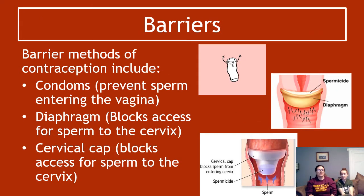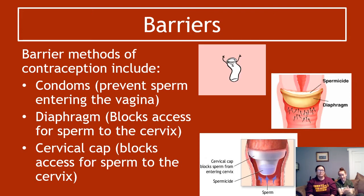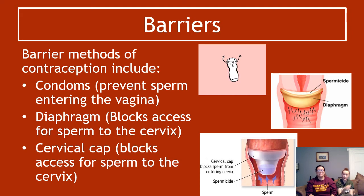In terms of barriers, the most common one is condoms, which physically prevent the sperm from being able to enter the vagina. If they're not in the vagina, they cannot swim up to the oviduct to meet an ova. A diaphragm blocks access to the cervix from the sperm. A cervical cap also blocks access from the sperm to the cervix. Both of these prevent sperm from travelling to the ova.